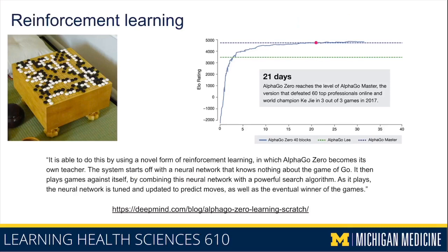Go is considered a very tough game. It was considered that even if a computer could master the game of chess, defeating professionals in Go would be out of reach because there are so many possible moves that it wouldn't be possible to build an algorithm that could consider every possibility as it plays in real time.